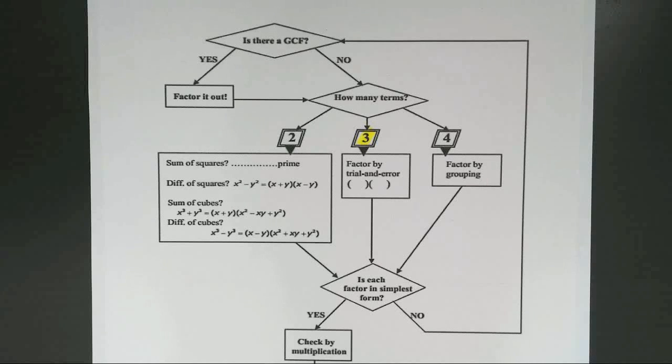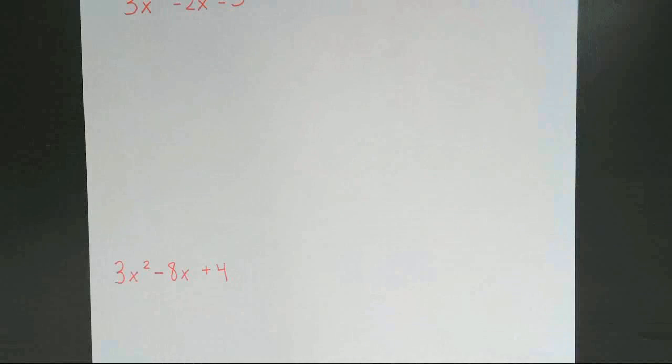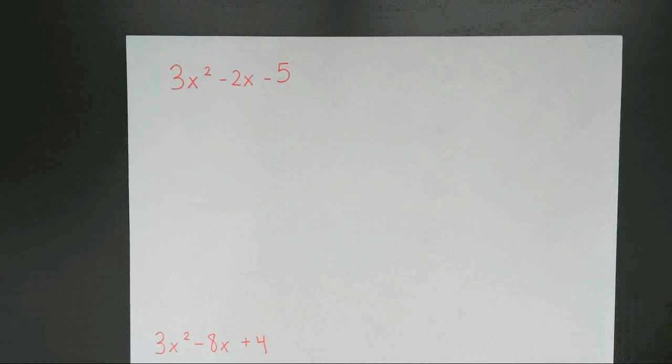Now to most students this is the hardest type of factoring. Anytime you have to factor when there's a number in front of x squared. So we're going to go ahead and get started. And we're going to look at this example first. 3x squared minus 2x minus 5.